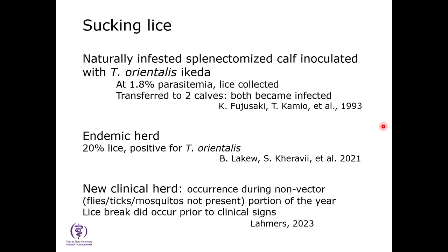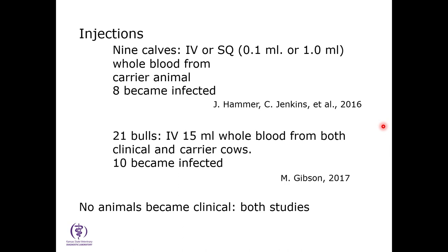Sucking lice is probably going to be a concern for this disease. Regarding iatrogenic transmission — can we transmit this disease through injections? In one study, nine calves were given either IV or sub-Q inoculations ranging from very low to relatively high amounts of blood from a carrier animal; eight of nine became infected. Another study IV'd whole blood from both clinical and carrier cows, and ten became infected. Importantly, in both studies, none of the calves that became infected actually became clinical. We'll discuss why that may be as we talk about the tick vector.